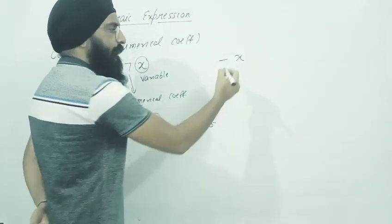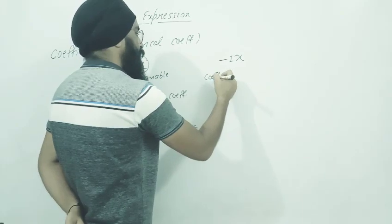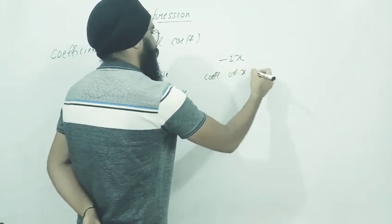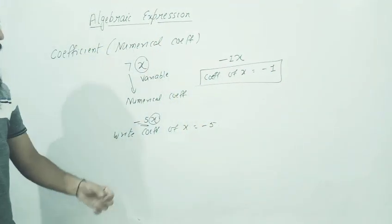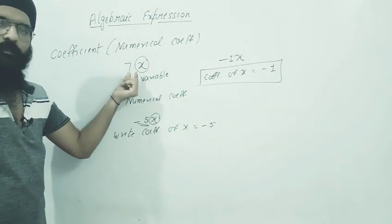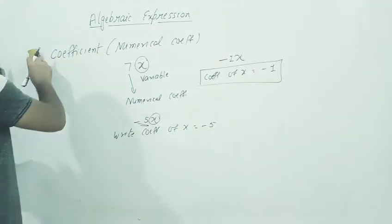If only x is written, then what will be there? If you're asked coefficient of x, that is minus 1. The coefficient of x is minus 1. Whatever is multiplied with the variable is called the coefficient. Now let's see on the basis of terms.